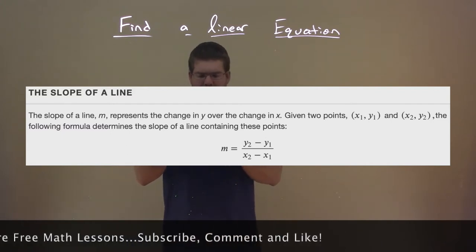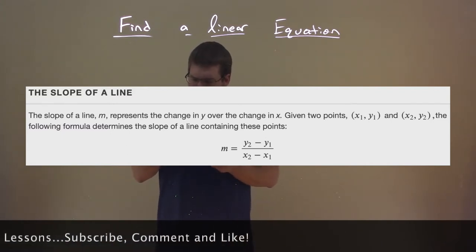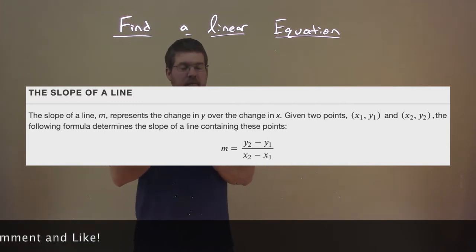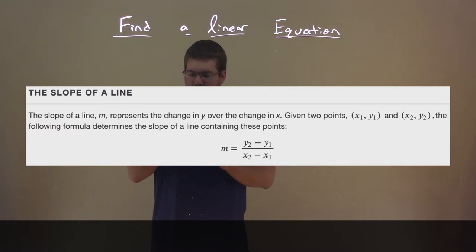Given two points, X1, Y1, and X2, Y2, the following formula determines the slope of a line containing these points. M equals Y2 minus Y1 over X2 minus X1.